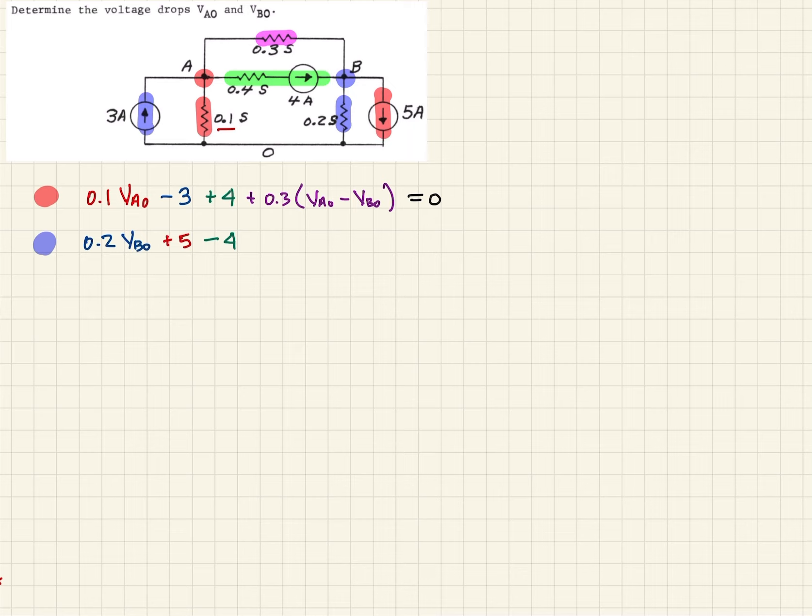And finally, the only one left is the purple one. And this time we're comparing it from node B to A, not A to B, so then we have to reverse the signs on those. So when we do that, it'll be minus 0.3 times VB0 minus VA0.